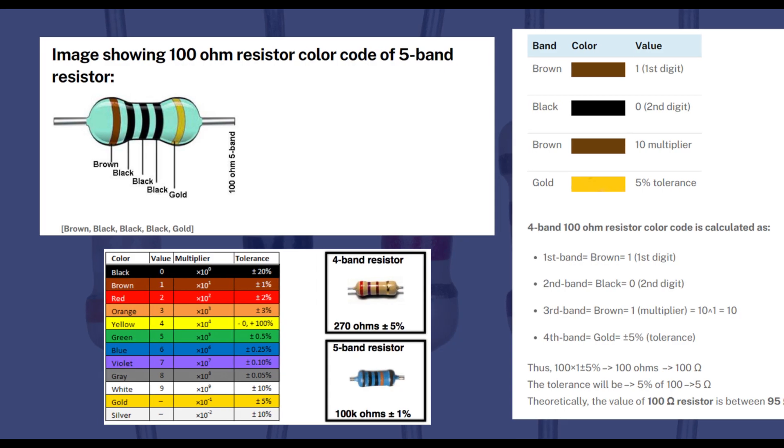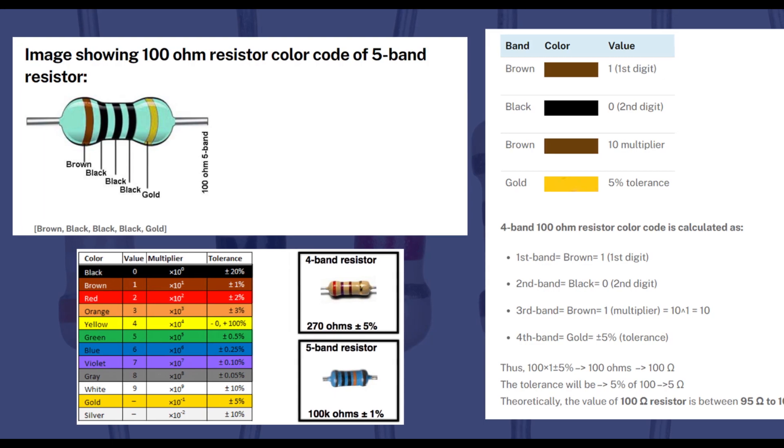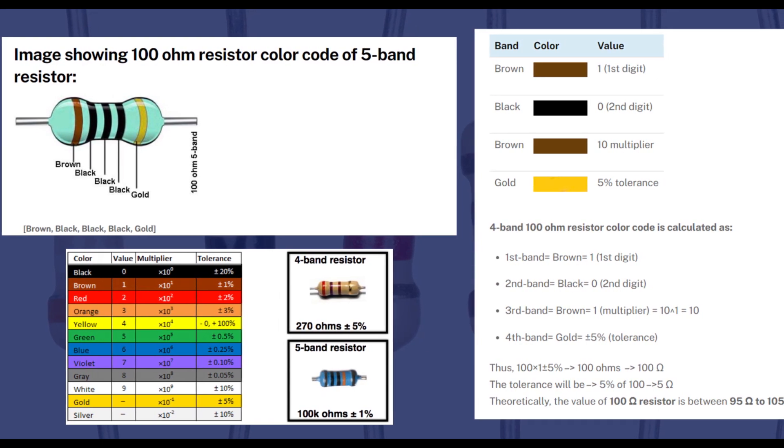And now you can see 100 ohm resistor color code of 5 band resistor. Formula for calculating resistor value for 5 band resistor is same as previous one.